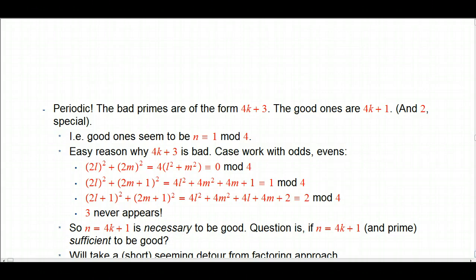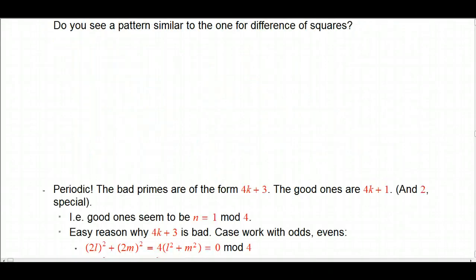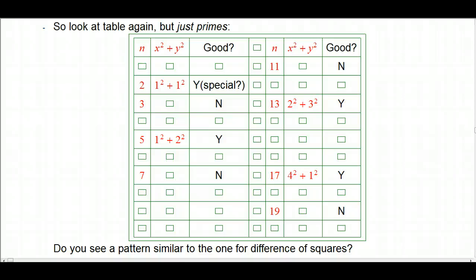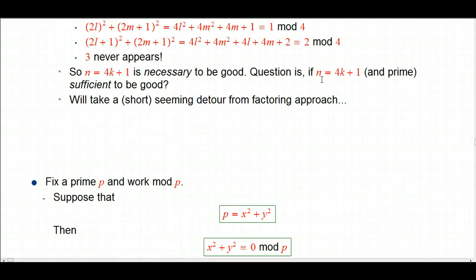And in order to further that, we're going to actually take a little bit of what seems like a detour from the factoring approach and the Gaussian integer stuff. But it's going to feel a little different, but it's actually going to be a crucial thing to combine with what we've seen already. So we've got a very particular question. If n is prime and congruent to 1 mod 4, is it the sum of squares? And we're going to be doing some interesting stuff in the next video.